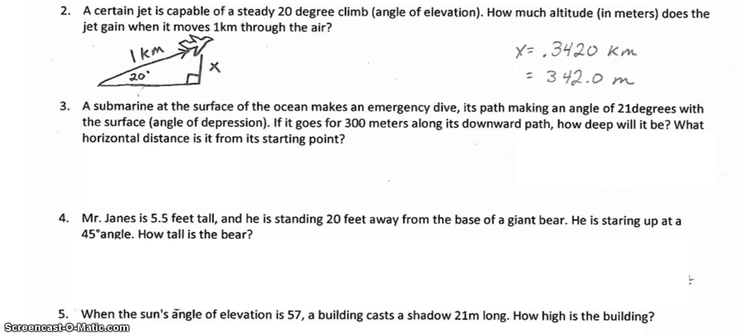Number 3. A submarine at the surface of the ocean makes an emergency dive, its path making an angle of 21 degrees with the surface, an angle of depression. If it goes for 300 meters along its downward path, how deep will it be? What horizontal distance is it from the starting point? I've circled the 21 degree angle of depression as being important, and the 300 meters along its downward path. For the question, there's actually two here, which makes this a little tricky. First, they're asking how deep will it be, that submarine? And second, they're asking what horizontal distance is it from its starting point? So actually, this will be two problems in one, with two different answers.